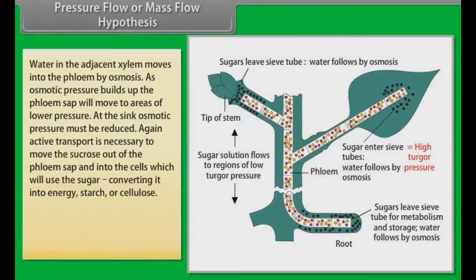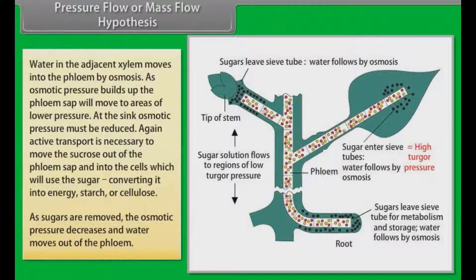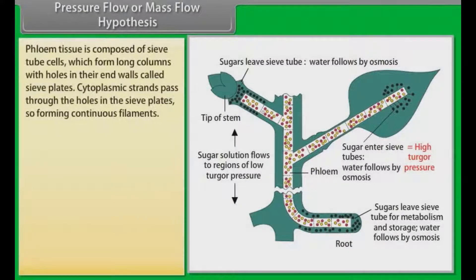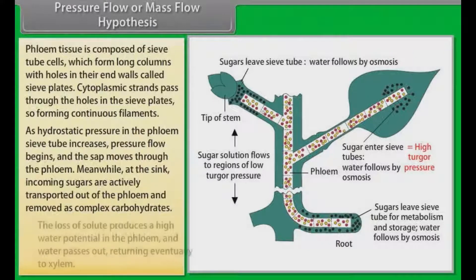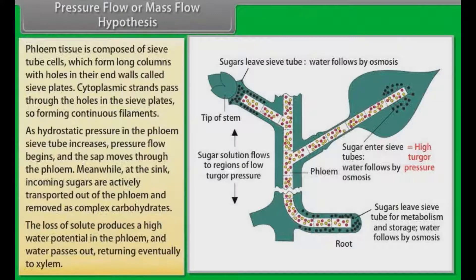At the sink, osmotic pressure must be reduced. Again, active transport is necessary to move the sucrose out of the phloem sap and into the cells, which will use the sugar, converting it into energy, starch, or cellulose. As sugars are removed, the osmotic pressure decreases and water moves out of the phloem. Phloem tissue is composed of sieve tube cells, which form long columns with holes in their end walls called sieve plates. Cytoplasmic strands pass through the holes in the sieve plates, forming continuous filaments. As hydrostatic pressure in the phloem's sieve tube increases, pressure flow begins and the sap moves through the phloem. At the sink, incoming sugars are actively transported out of the phloem and removed as complex carbohydrates. The loss of solute produces a high water potential in the phloem and water passes out, returning eventually to the xylem.